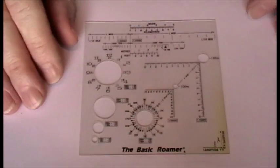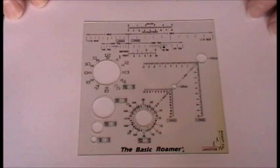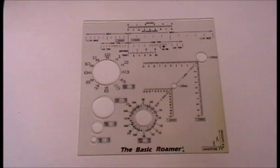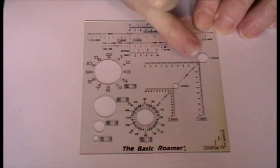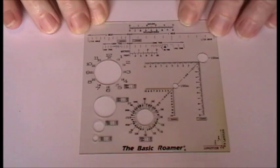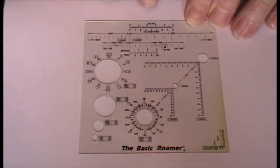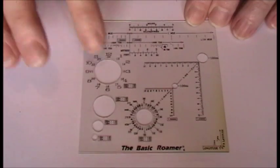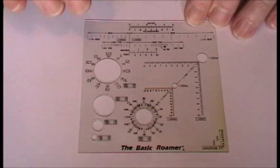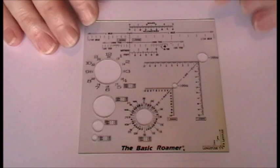A map romer is basically just a small piece of plastic, but it's got all the different scales on it. This one's also got a protractor and distance scales, as well as holes cut out which you can use with a pencil to mark your map.